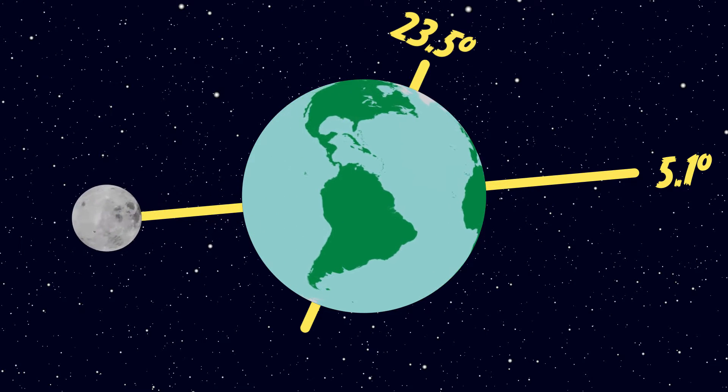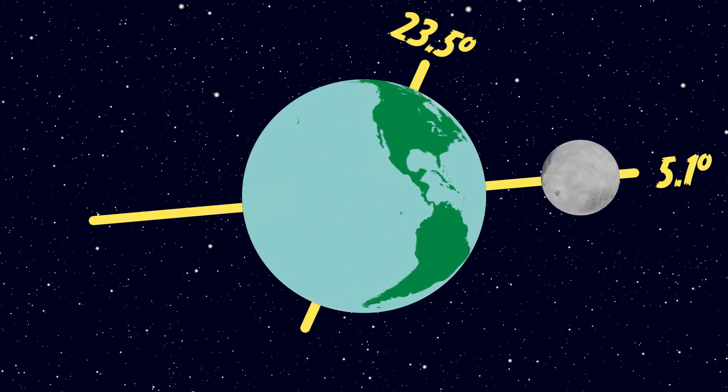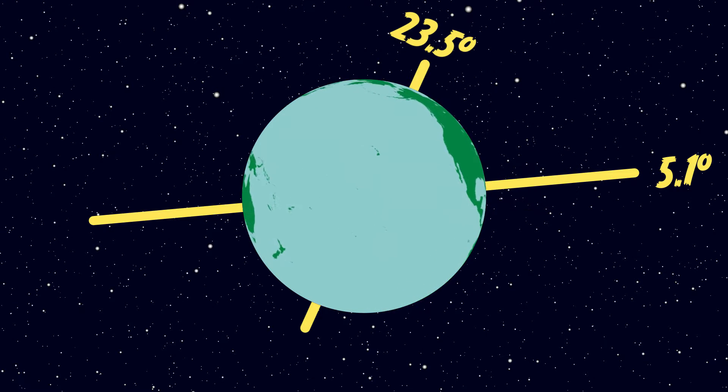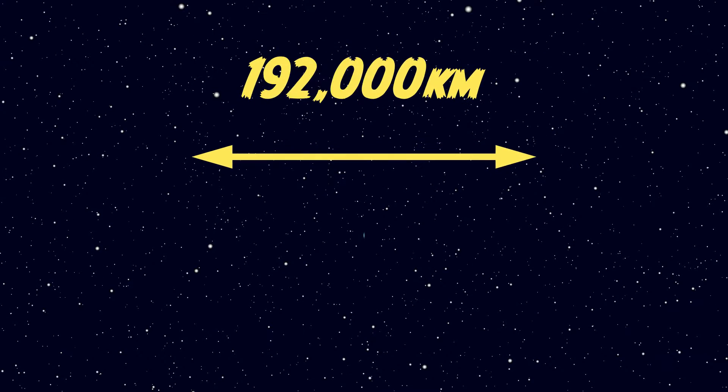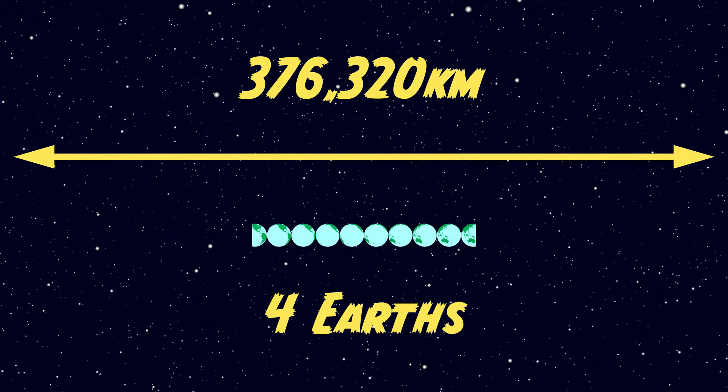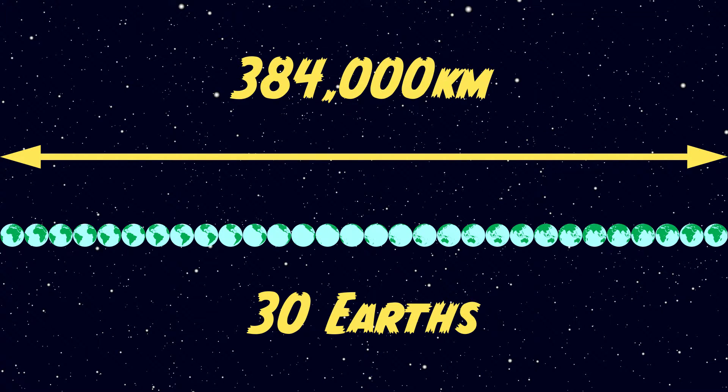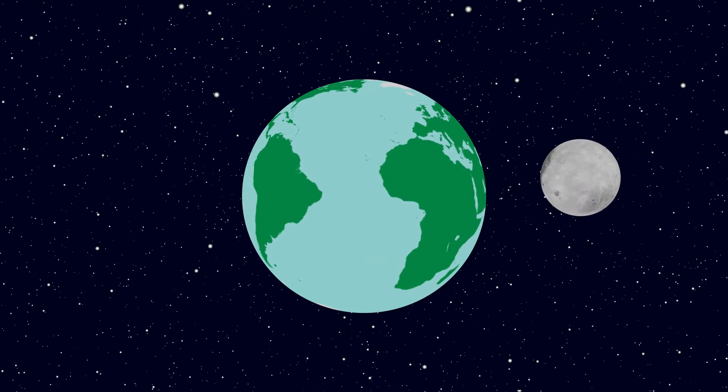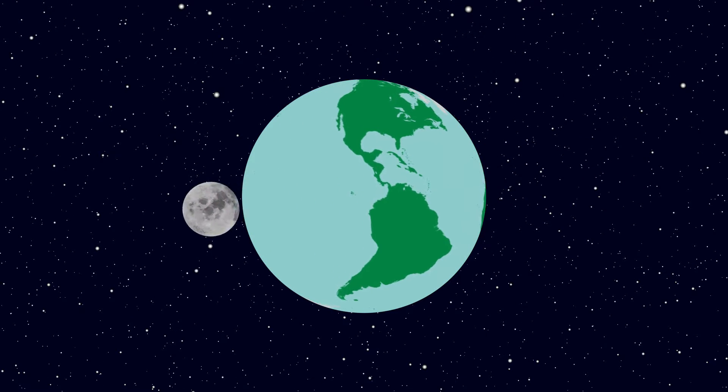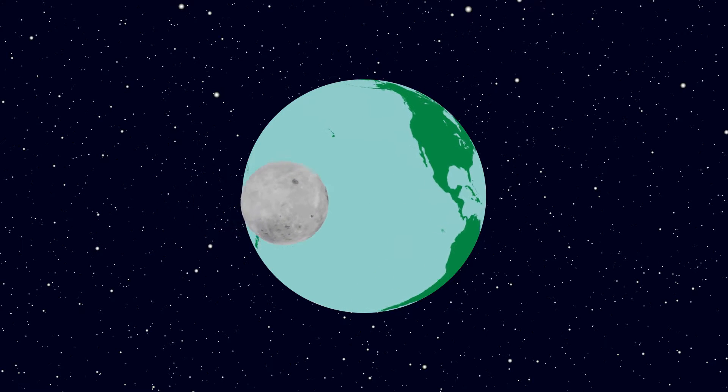So to make everything to scale and to solve our eclipse problem, we need to look at how far the Earth is from the moon. On average, the Earth and the moon are about 384,000 kilometers apart, which is about the diameter of 30 Earths. So instead of looking like this, the whole thing really looks more like this.